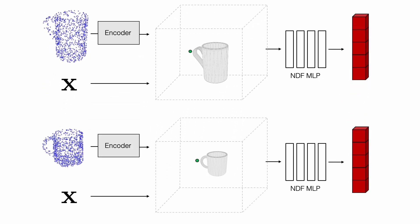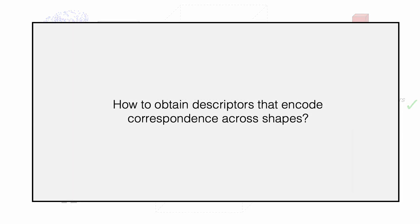We want our descriptors to encode this information in a way that is consistent across instances from a category, such that points near similar geometric features, like these two points on the handles of two different mugs, are mapped to the same descriptor value. A natural question to then ask is how can we build a descriptor field with the property of encoding correspondences across shapes?